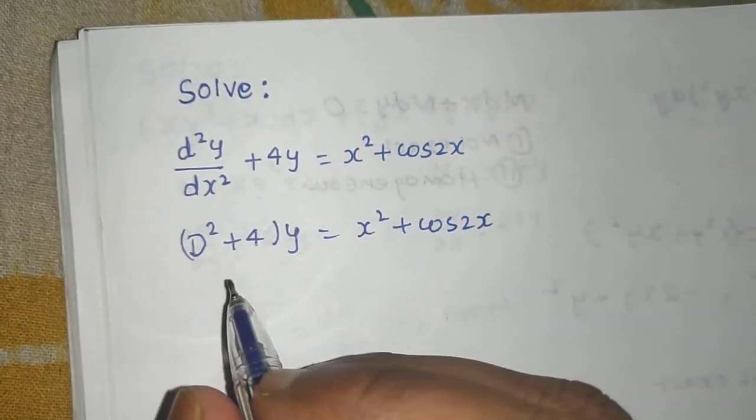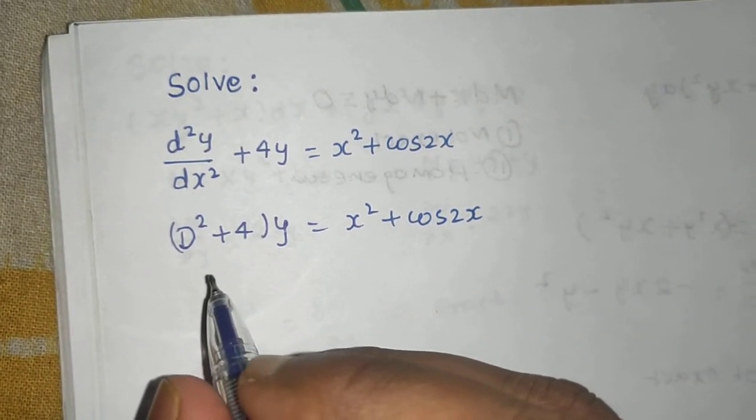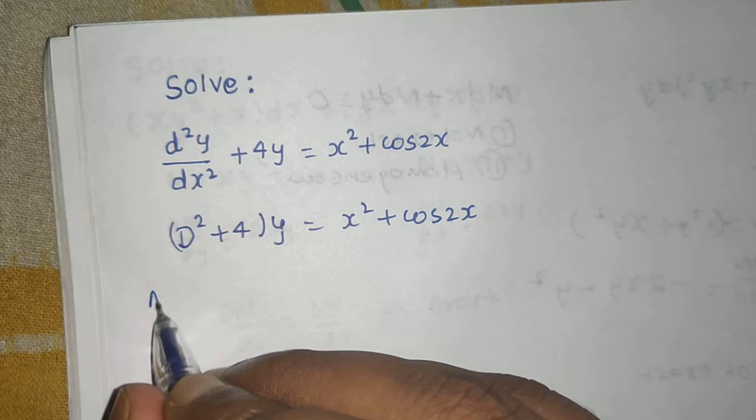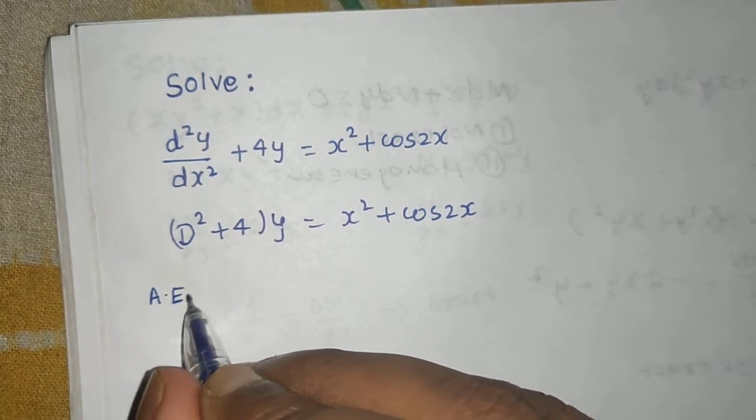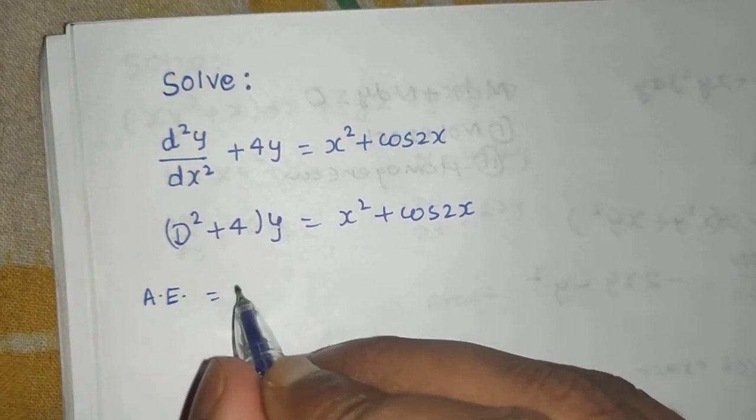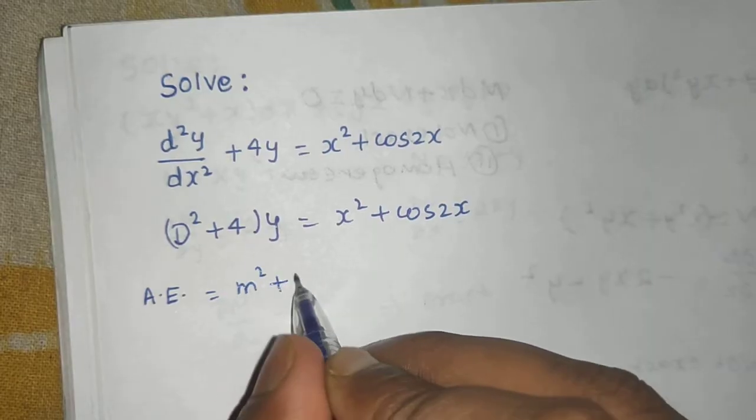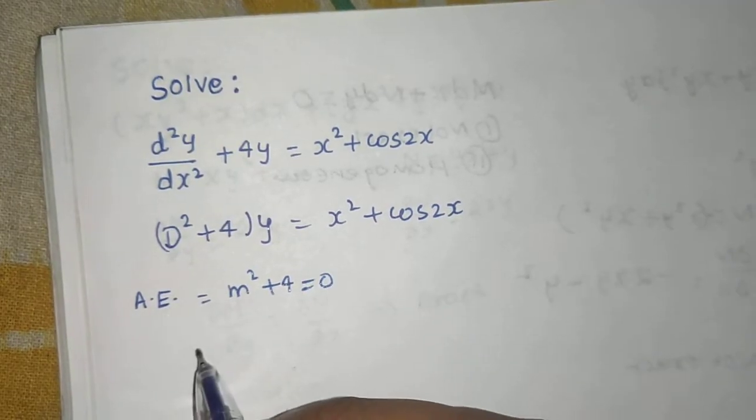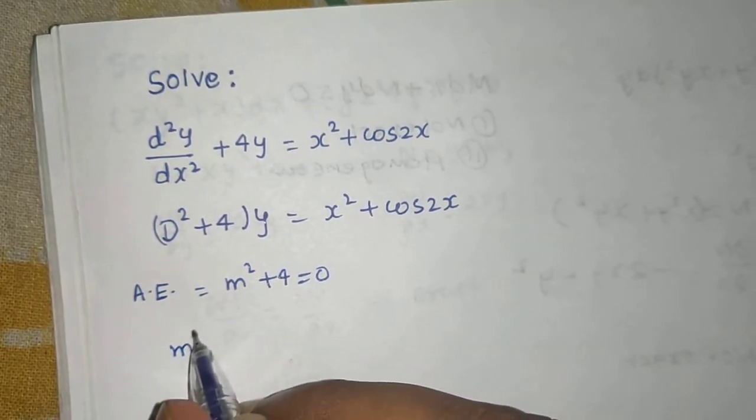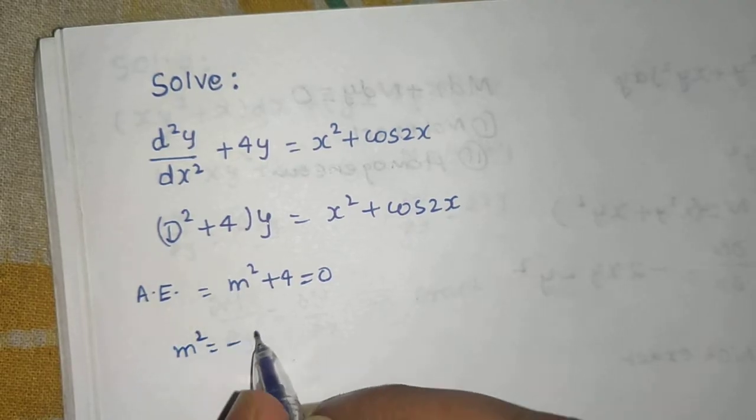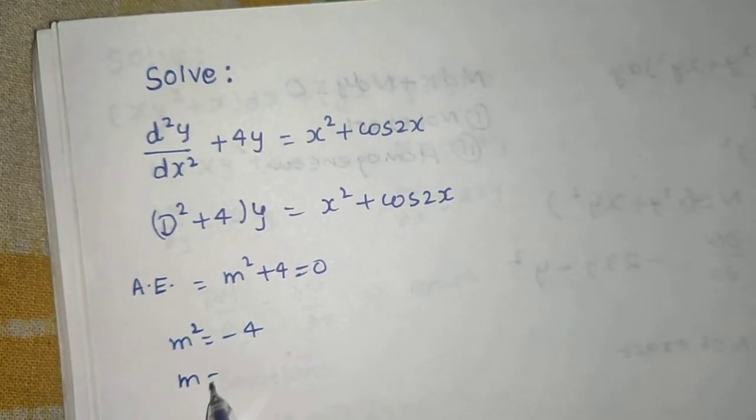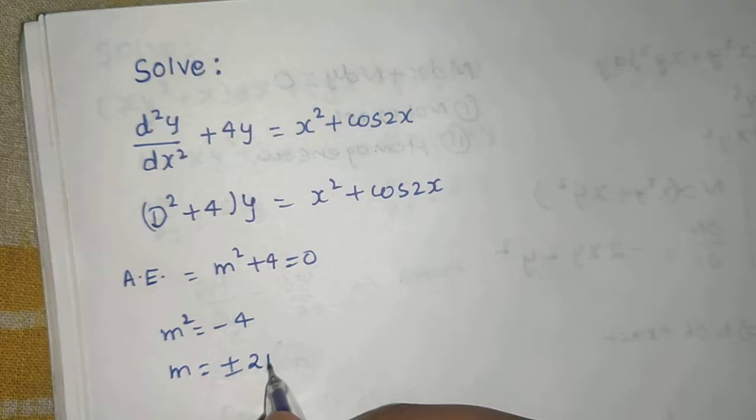So we find the complementary function. For that we need the auxiliary equation which will be replaced this D by m. So m² + 4 = 0. So m² = -4. So m = ±2i.